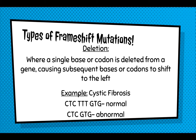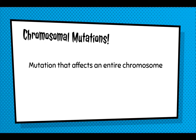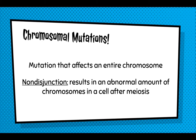The final type of mutation is called a chromosomal mutation. This is a mutation that affects the entire chromosome and is a result of non-disjunction, meaning the chromosomes don't separate as they should during meiosis. You end up with cells that have an abnormal amount of chromosomes at the end of making sex cells.